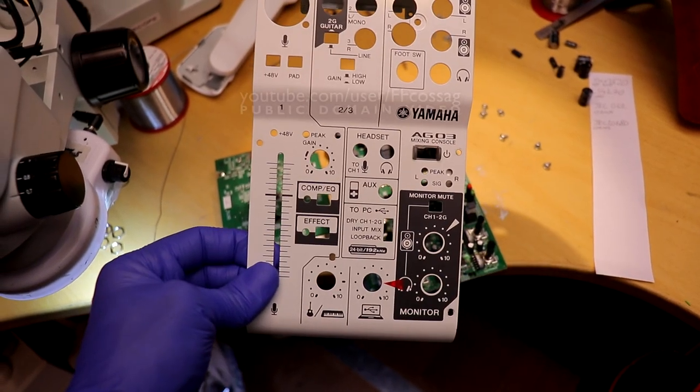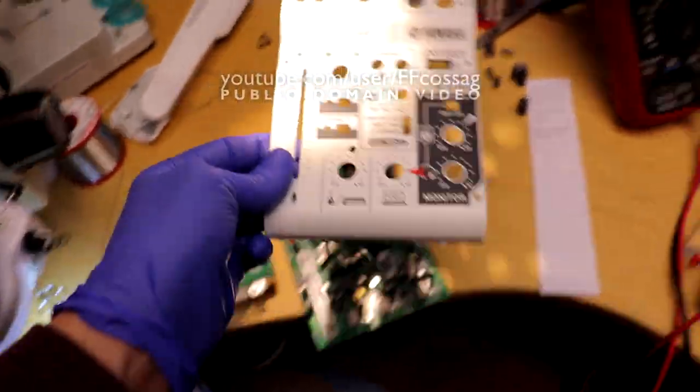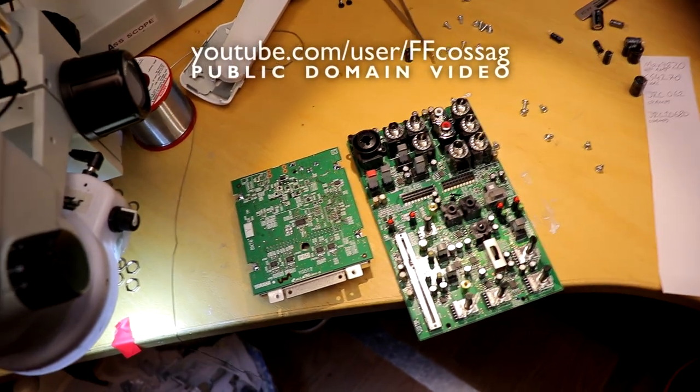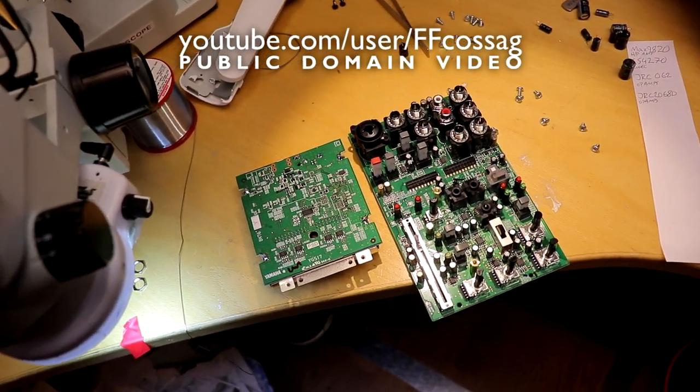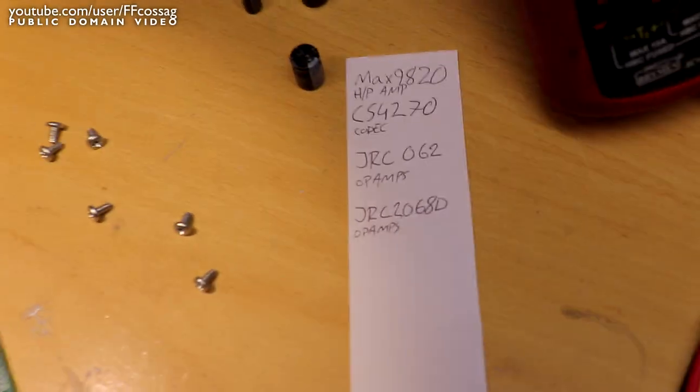This is a Yamaha AG-03 mini mixer USB soundcard type thing. I've taken it apart because I got one and I'm curious as to what's inside it. So, the quick rundown for all the audio files out there.